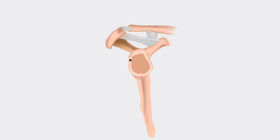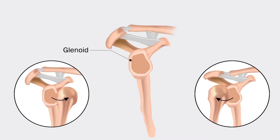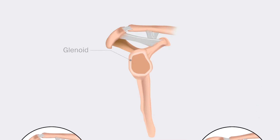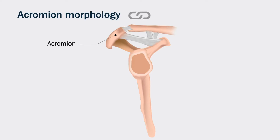The shape of the shoulder socket, or glenoid, is known to contribute to recurrent shoulder instability. But does the architecture of the bony roof of the glenohumeral joint, called the acromion, also play a role?